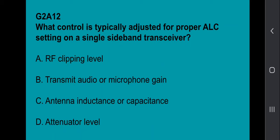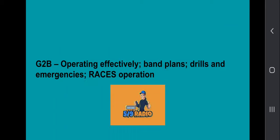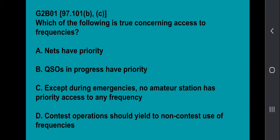G2A12: What control is typically adjusted for proper ALC setting on a single sideband transceiver? That would be transmit audio and microphone gain. G2B covers operating effectively — band plans, drills and emergencies, and RACES operations.